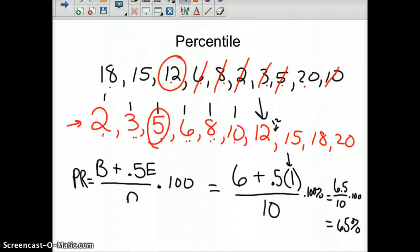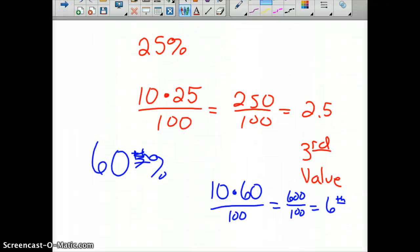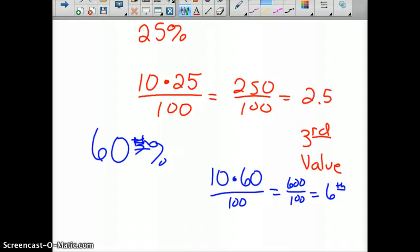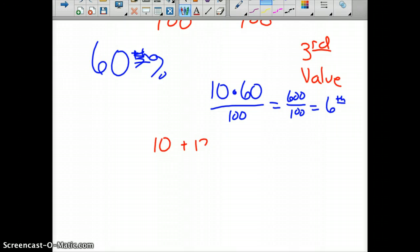Now, it came out as a whole number, and that's why I kind of jerked around, because I forgot that there is a rule if it comes out whole. If it comes out as a whole number, so we got 1, 2, 3, 4, 5, 6. So, we'd be looking at the 10th data value. But if it does come out whole, we need to use the 6th and the 7th and find the average of the two.